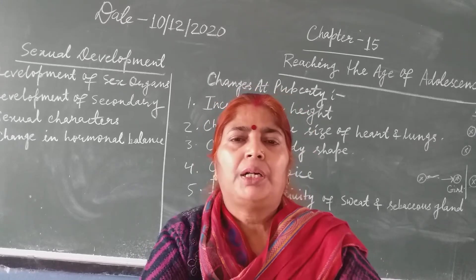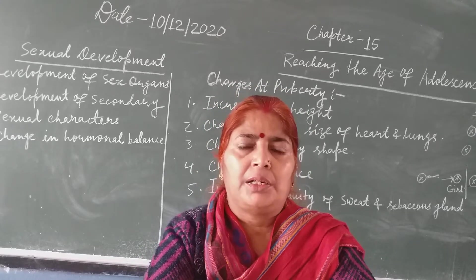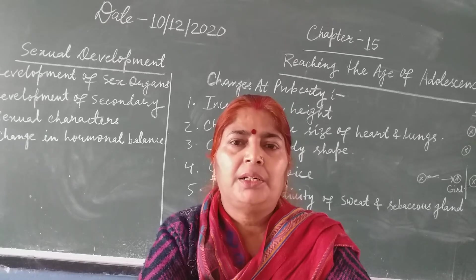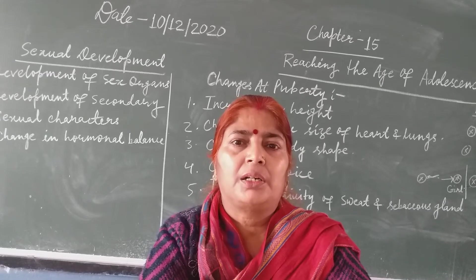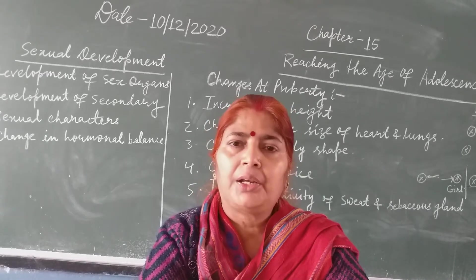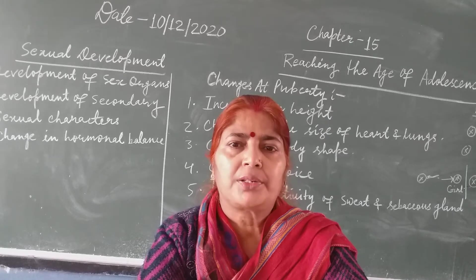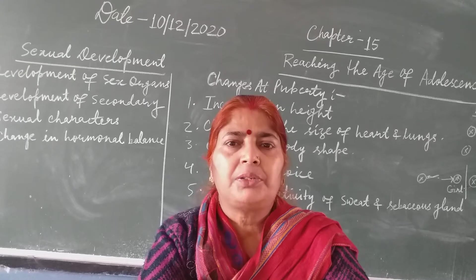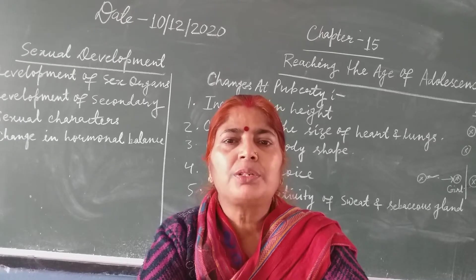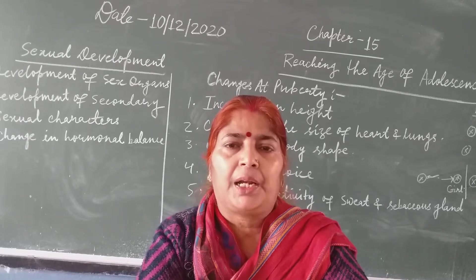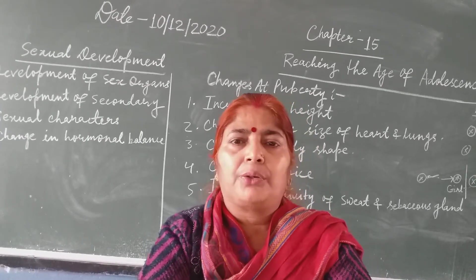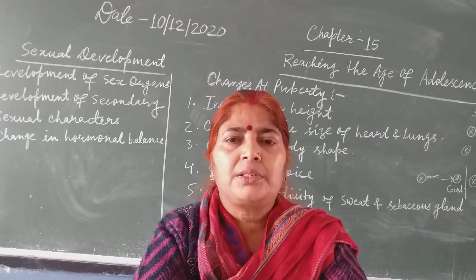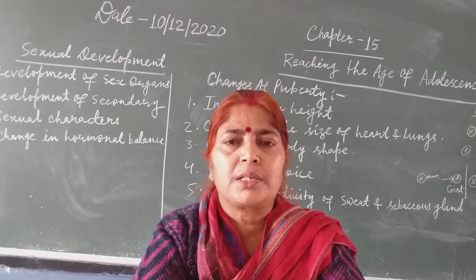Today we will read what changes take place at the age of puberty. The first change is an increase in height. The arms and the neck grow faster in comparison to other parts of the body, so the body becomes disproportionate and looks awkward. But after some time the growth settles and the body looks normal. At this age the growth is at its maximum, which is called the growth spurt.